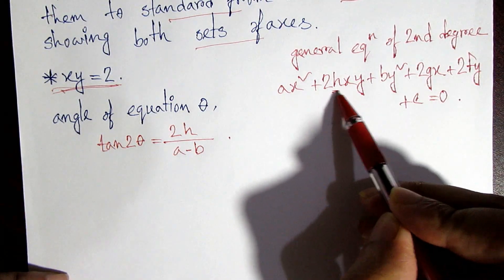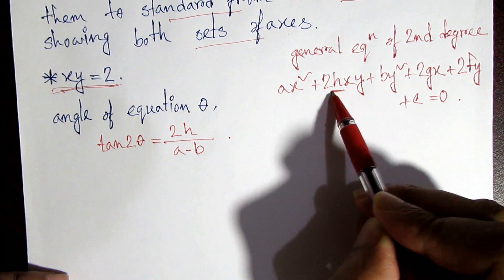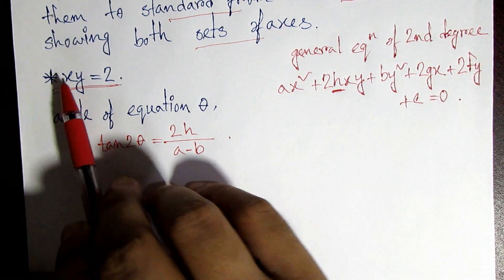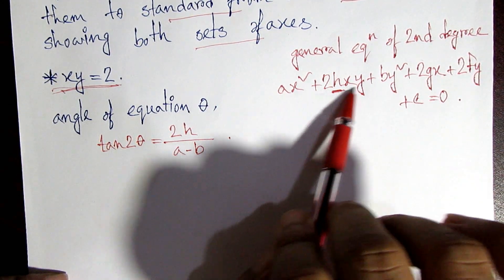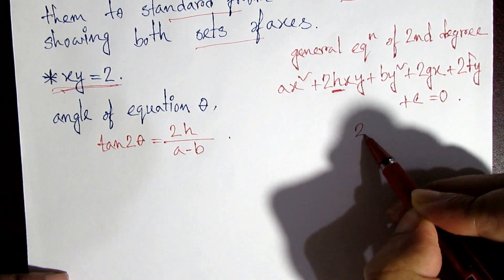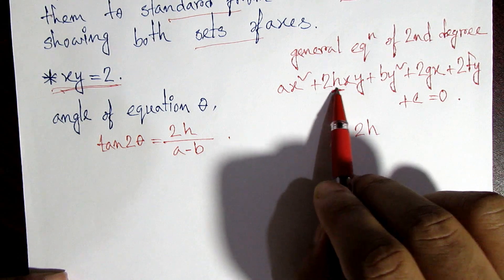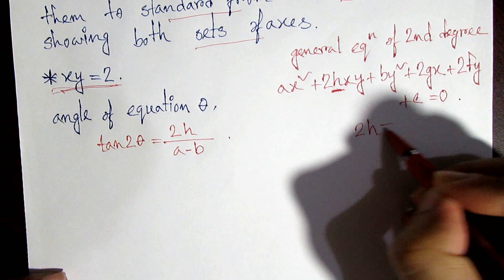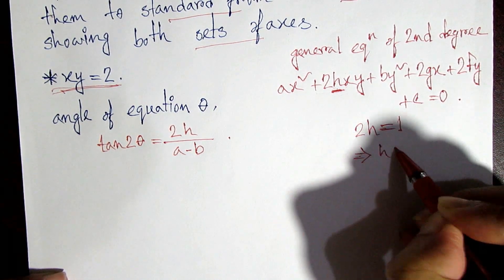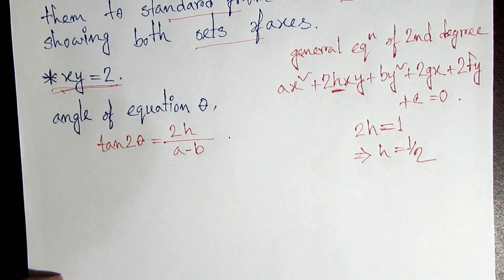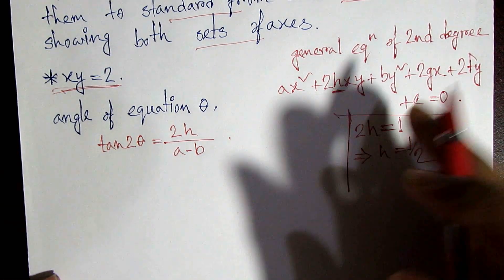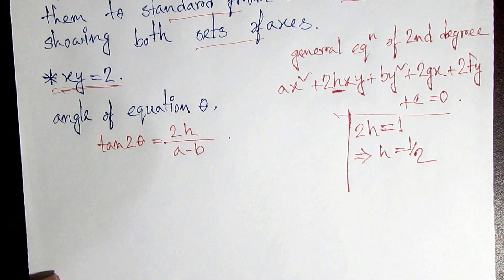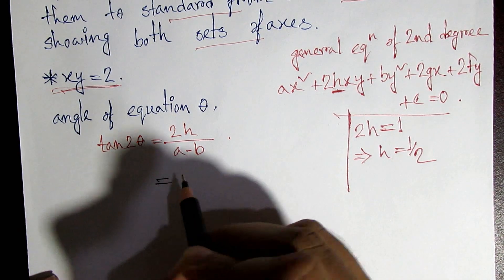If we look at the xy term, we have 2h equal to 1, so h equals one-half. So h is equal to half.